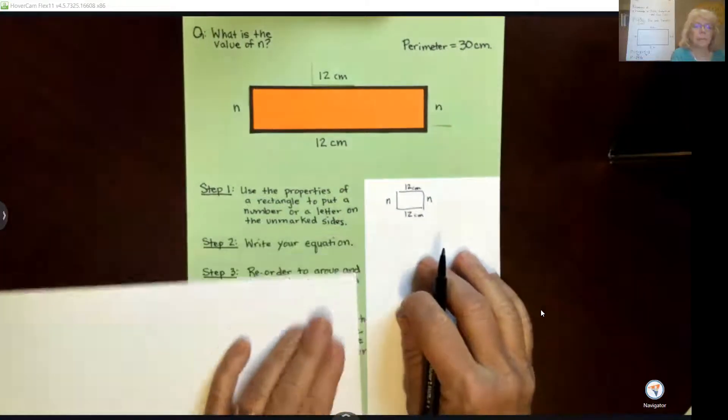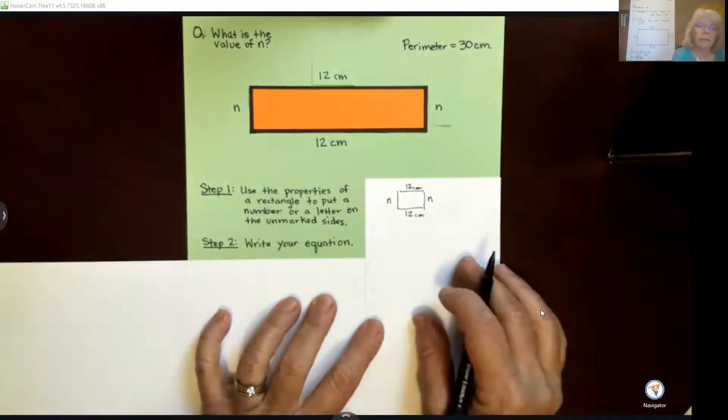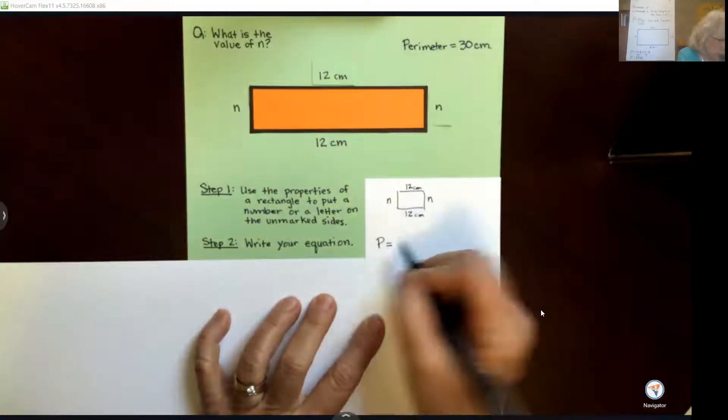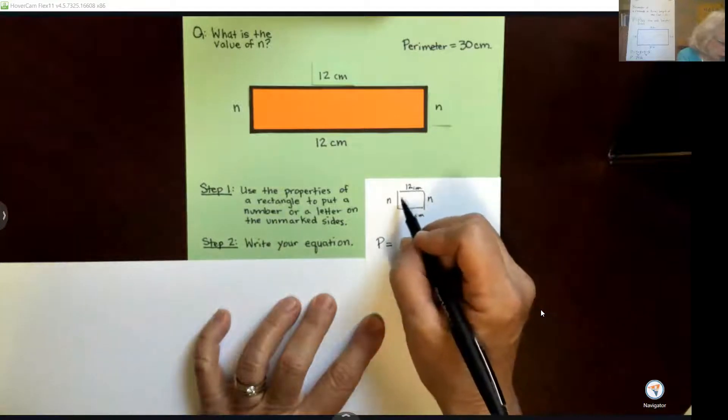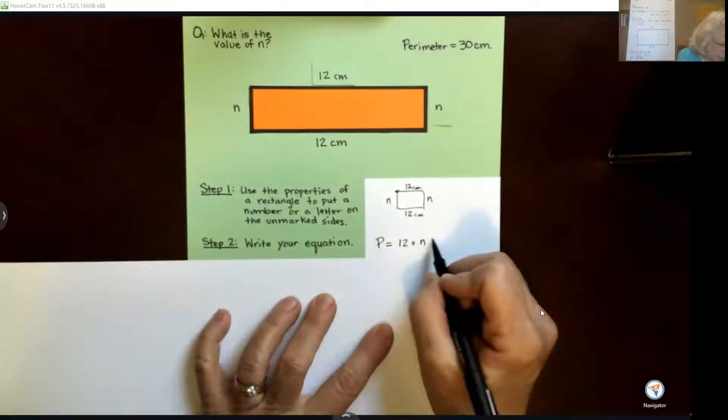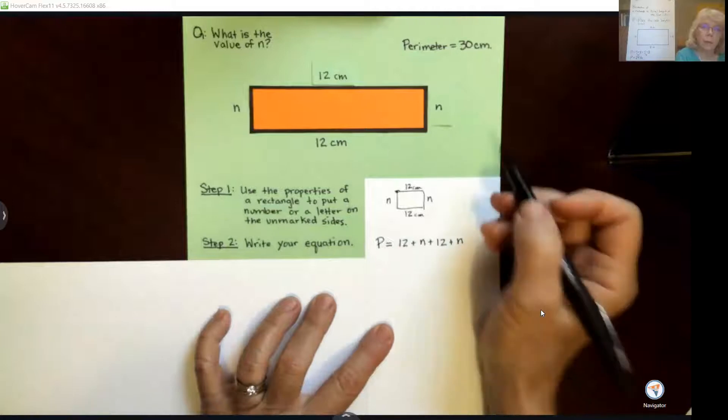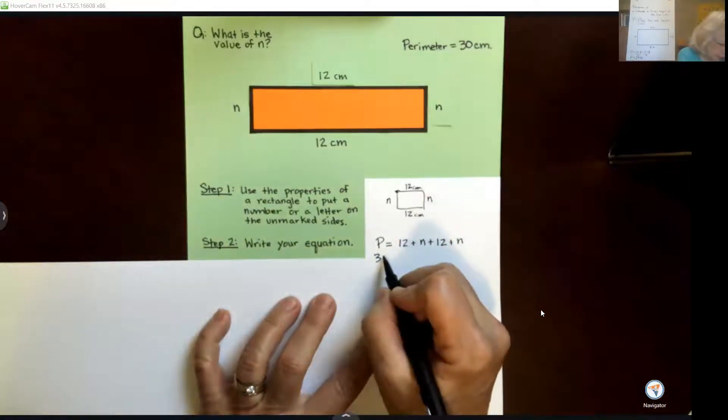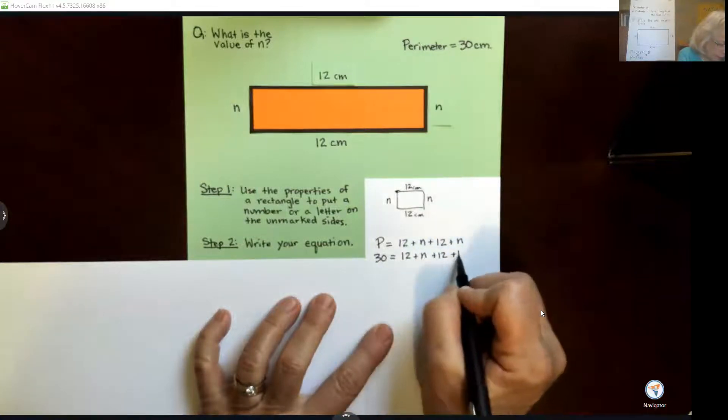Okay, what is step two? Step two is we write our equation. So our equation is perimeter, we plus the sides. So we're going to start here and we have 12 plus n plus 12 plus n, and we know our perimeter is given, it's 30 centimeters, so we can put that in for our P. So we have 30 equals 12 plus n plus 12 plus n. Well, that looks pretty messy.